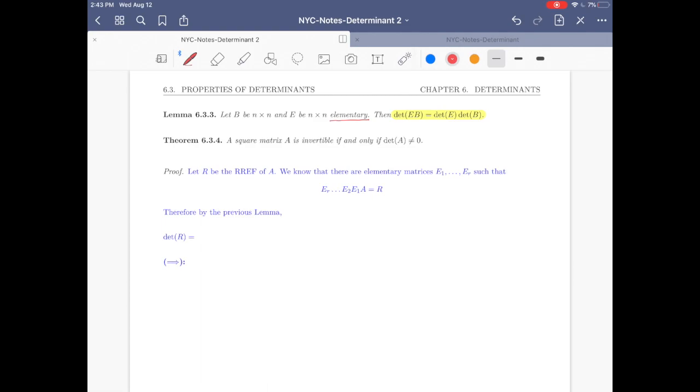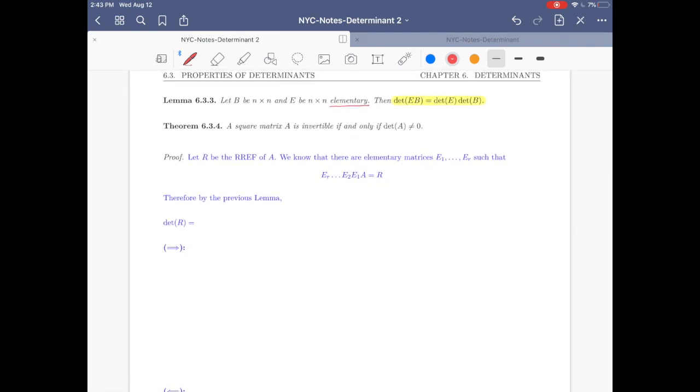Theorem 6.3.4: A square matrix A is invertible if and only if the determinant of A is not zero. Let's prove it. Let R be the RREF of A. We know that there are elementary matrices E1 through ER such that the product ER times ... times E1 times A equals R. This was a result from one of the earlier theorems.